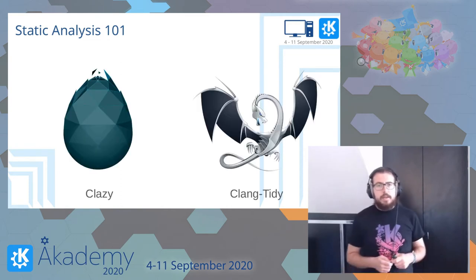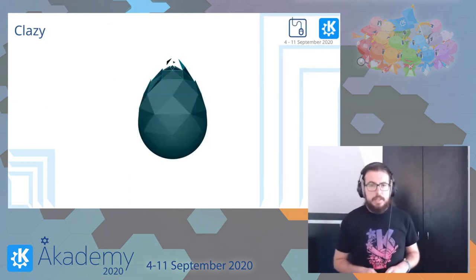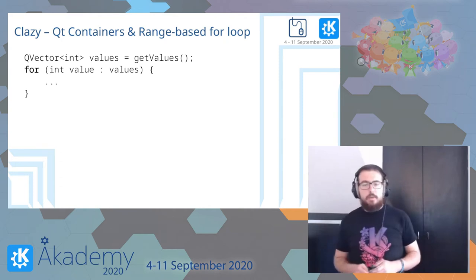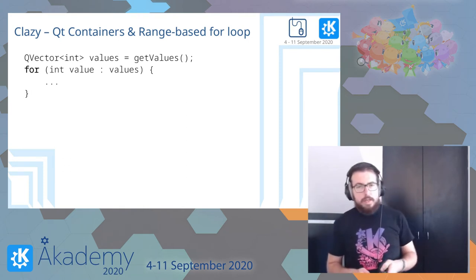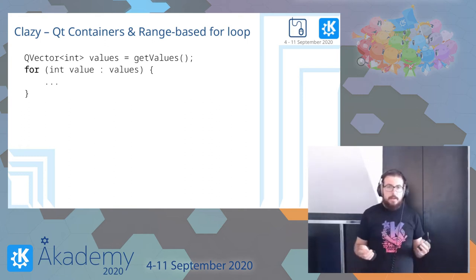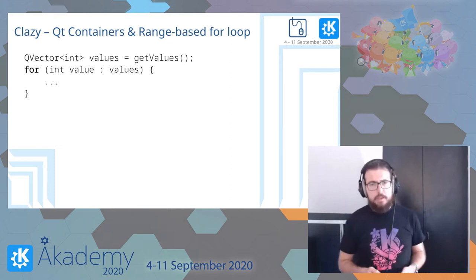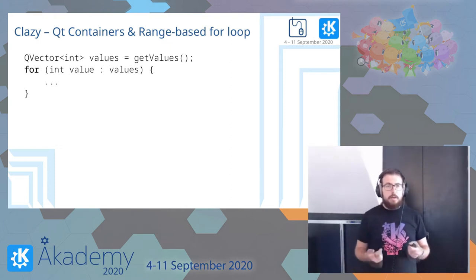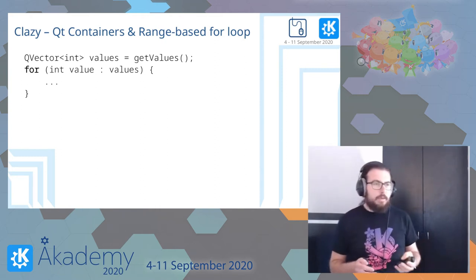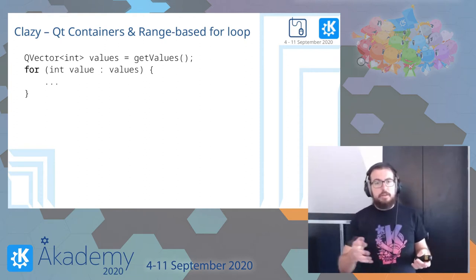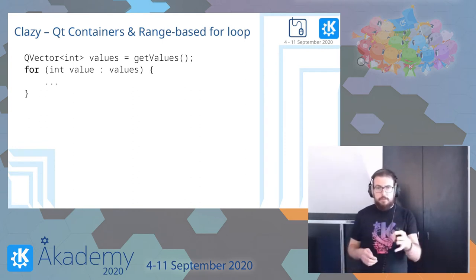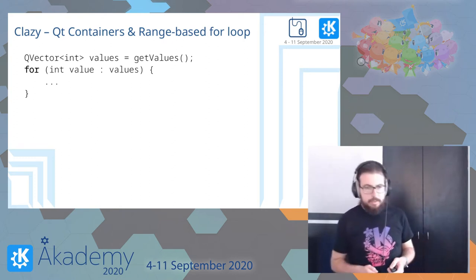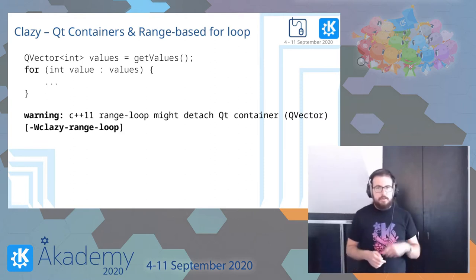The two static analyzers I want to talk about are Clazy and Clang-Tidy. You may have heard about Clazy — Clazy is actually a KDE project. It's a static analyzer with a wide range of Qt-specific checks, like this one: if you use a non-static, non-const QVector in a range-based for loop, it's perfectly valid C++, it compiles, it works — except it's not ideal. Using a non-const Qt container in a range-based for loop might detach the container, and this can easily slip past a review, especially if instead of 'QVector int' it just says 'auto'.